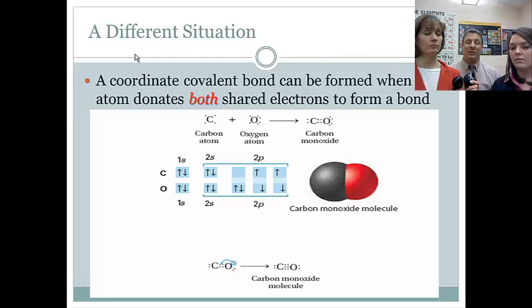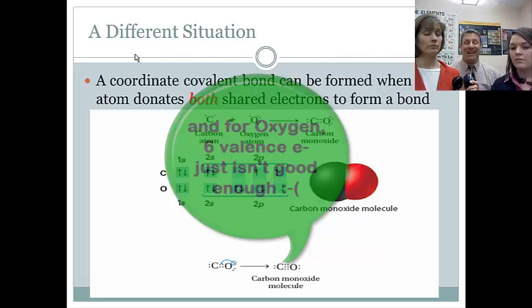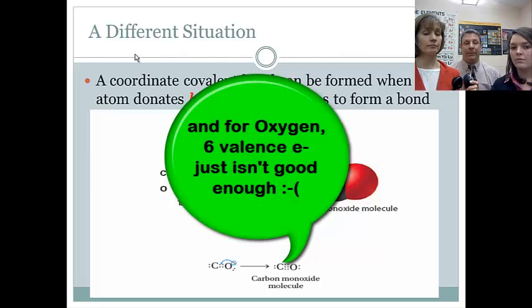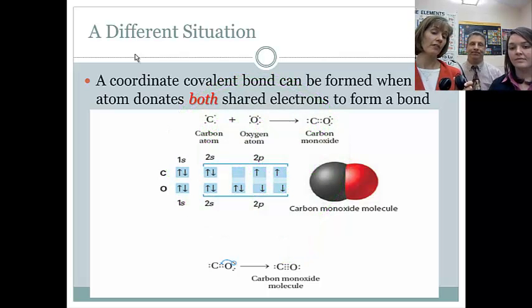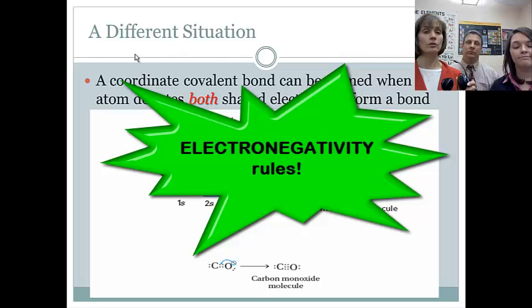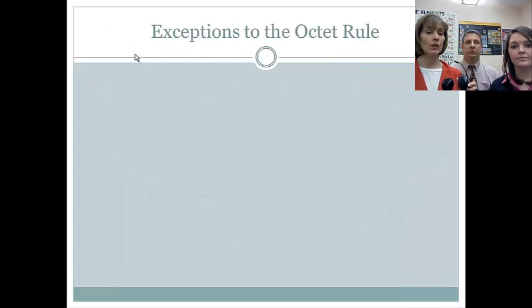Some people might ask on that very bottom diagram there, why doesn't carbon just throw its pair of electrons in? Why is it oxygen that gives them up? Well, if carbon throws its pair of electrons in and forms the coordinate covalent bond that way, then oxygen only has, or thinks it only has, six valence electrons. And oxygen's just trying to make sure everybody has eight. And carbon, that wouldn't really help carbon because it still wouldn't have eight. And it's the atom with the higher electronegativity is the one that tends to do this in the examples that you're going to see.